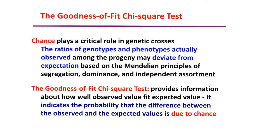Let's consider a simple scenario in which you perform a monohybrid cross with two homozygous individuals — one homozygous dominant and one homozygous recessive. Under such a scenario, you expect that in the F2 generation the individual phenotypes will fall into a 3-to-1 ratio. However, to obtain this perfect ratio you would have to count an indefinite number of individuals — which is almost impossible.